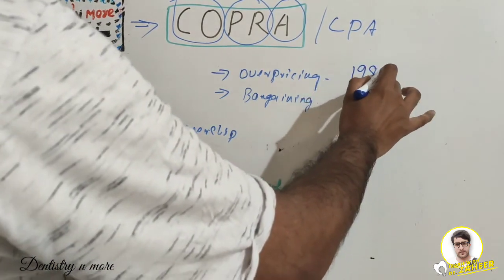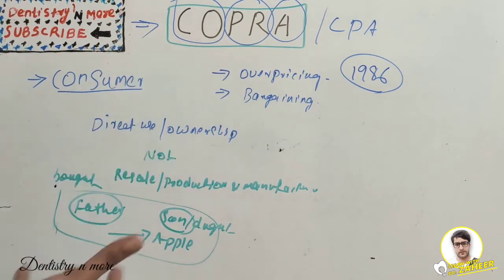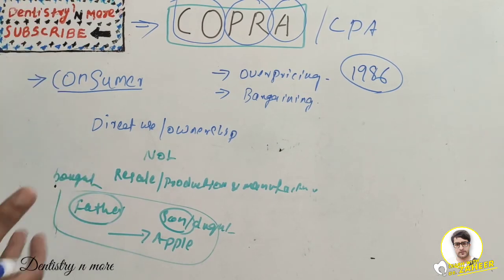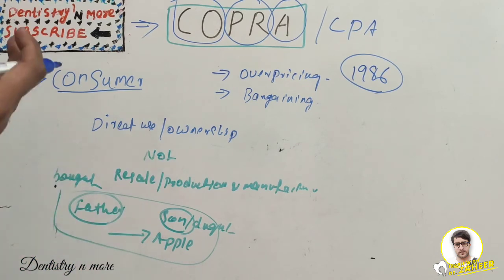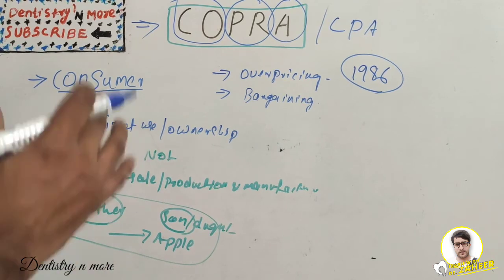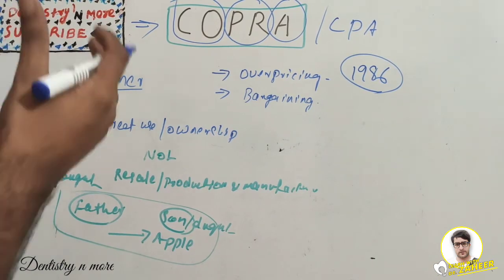COPRA came into existence in 1986 — a landmark year for consumers. The objectives of the CPA are to protect consumers from abuse, to provide a venue for grievance redressal, and to ensure a better quality of living by improving the quality of consumer products and services.